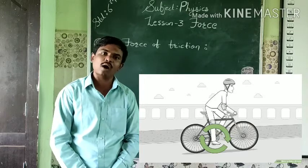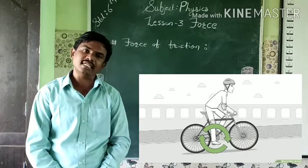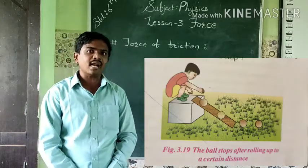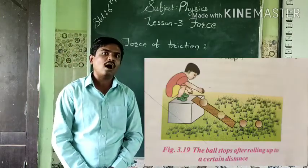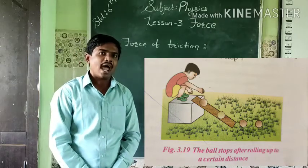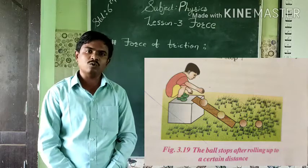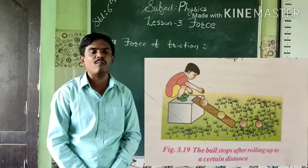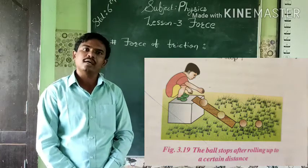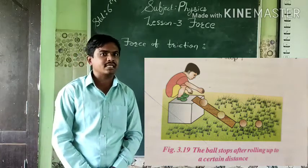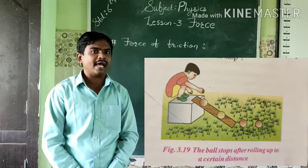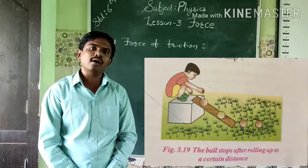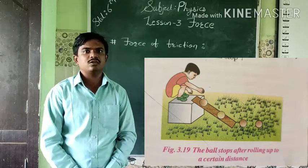That is why the bicycle slows down after covering a certain distance. Another example: when we roll a ball on the plain ground, it covers a certain distance and the ball slows down, because there is a force of friction between two surfaces — the surface of the ball and the surface of the ground — and these two surfaces come in contact.